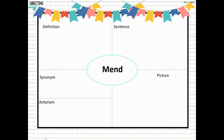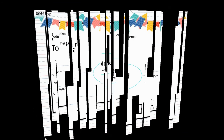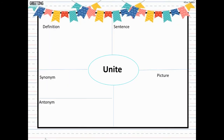Our second word for this week is mend — M-E-N-D — and that is a verb, or an action word. Mend means to repair something. I tore a hole in my pants and I had to mend it, meaning repair the hole or fix it. I mended the box by putting some glue on it. So the word mend is a verb that means to repair.